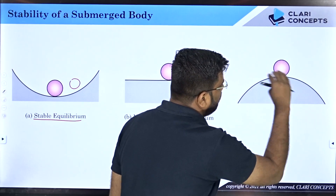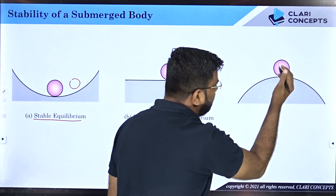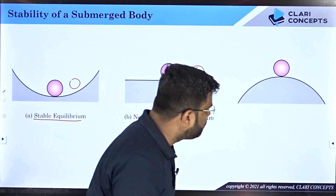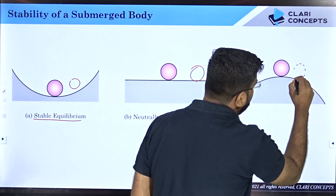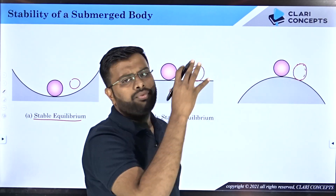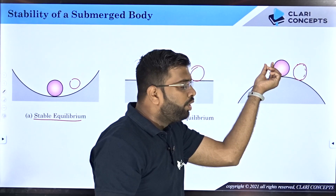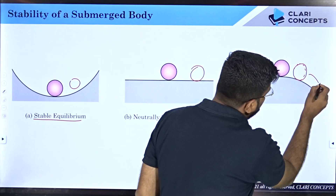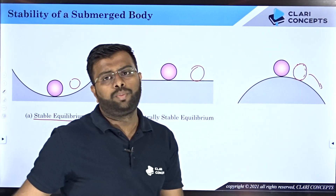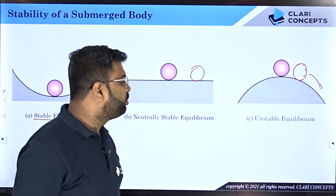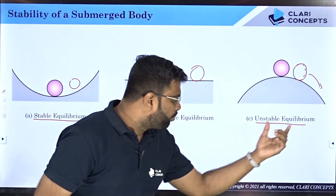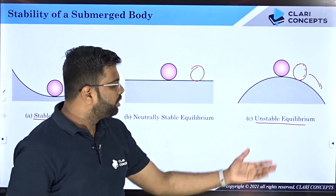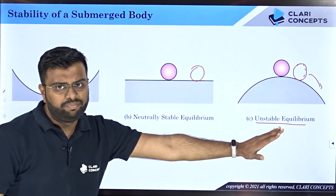For the third type, suppose a ball is perfectly balanced on a curved cloud surface, with weight balanced by the reaction force. If you provide a slight disturbance and release the ball, it will not come back to the top, nor stay there — instead it will deviate further downward. This kind of equilibrium is known as unstable equilibrium: the body is in equilibrium, but any small disturbance makes it become unstable.